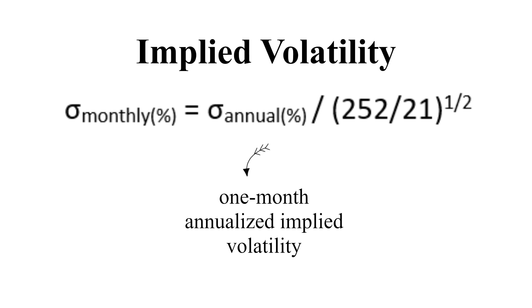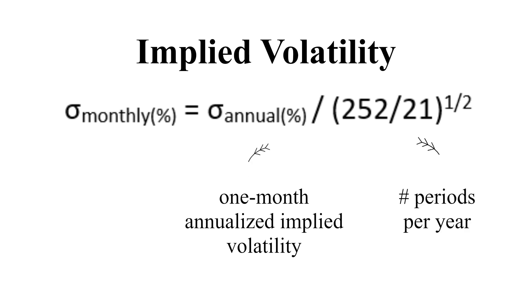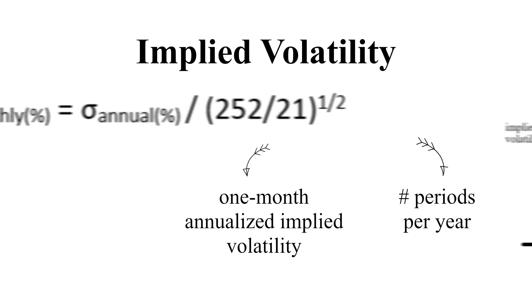From this annualized implied volatility, we go back to monthly volatility by dividing it by the number of months per year.